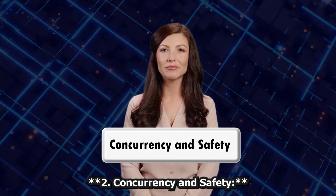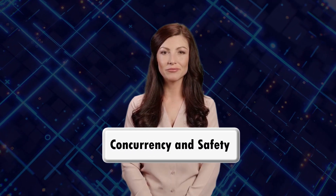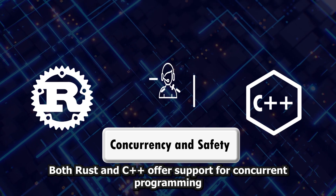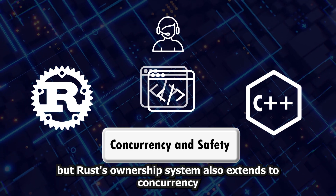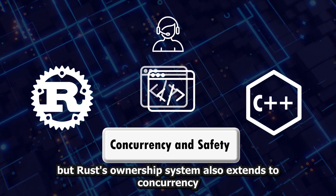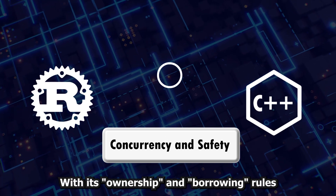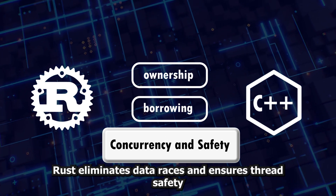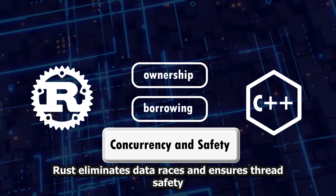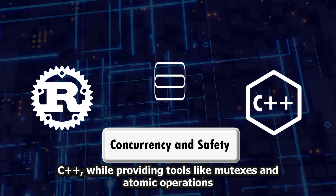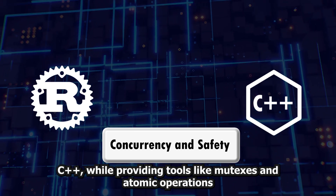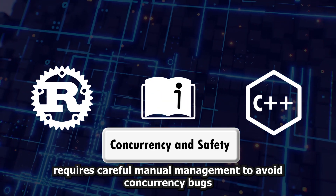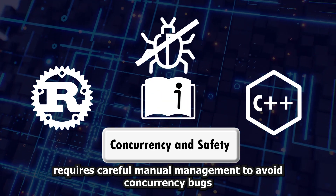2. Concurrency and Safety. Both Rust and C++ offer support for concurrent programming, but Rust's ownership system also extends to concurrency. With its ownership and borrowing rules, Rust eliminates data races and ensures thread safety. C++, while providing tools like mutexes and atomic operations, requires careful manual management to avoid concurrency bugs.